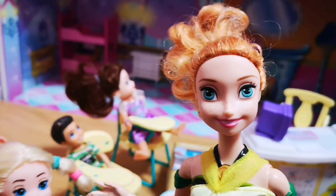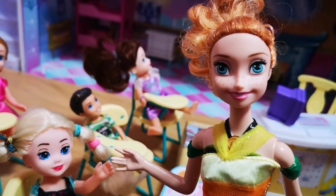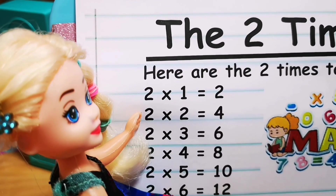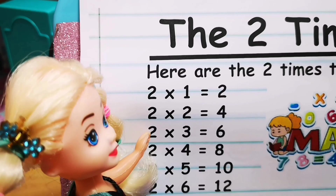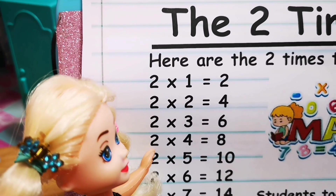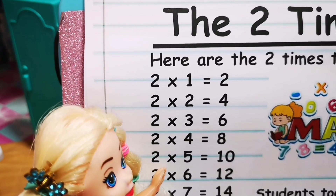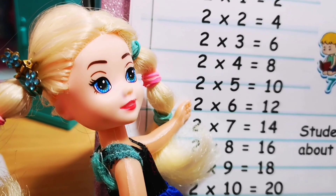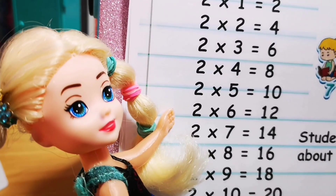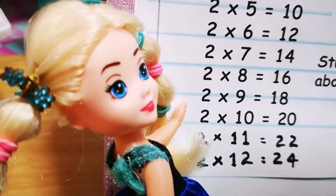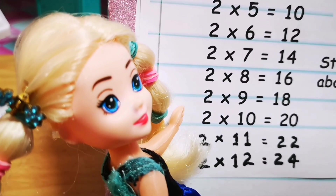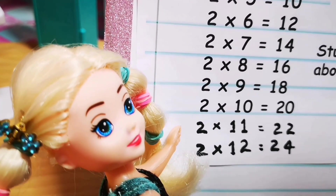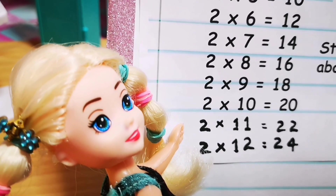Okay, so Rose, I'll pick you — come and revise the two times table. Two times one is two, two times two is four, two times three is six, two times four is eight, two times five is ten, two times six is twelve, two times seven is fourteen, two times eight is sixteen, two times nine is eighteen, two times ten is twenty, two times eleven is twenty-two, two times twelve is twenty-four.